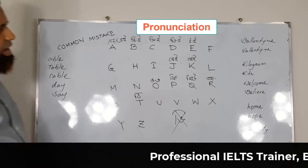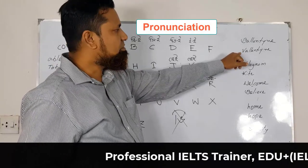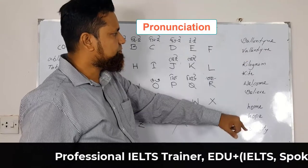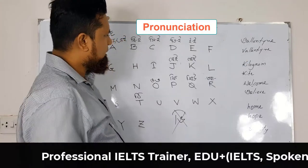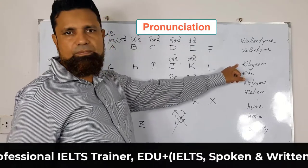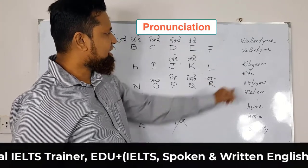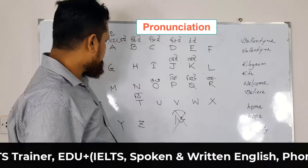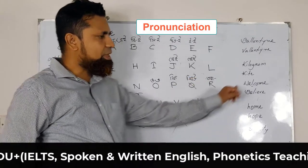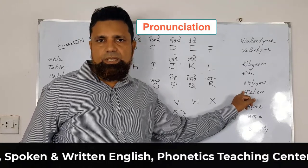Let's try: Valentine. Valentine — not B but V. Let's try with K. Kilogram — this is like the Bengali K sound. Cow. Kite. We have a problem in pronouncing L. Welcome. Believe. People.